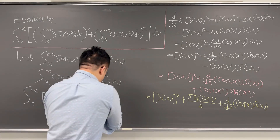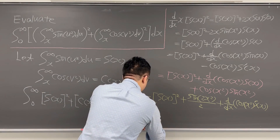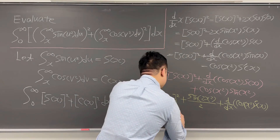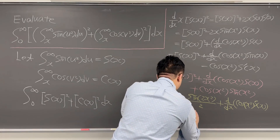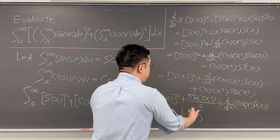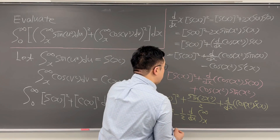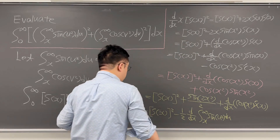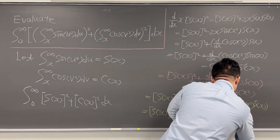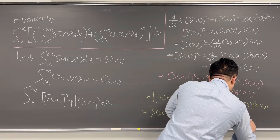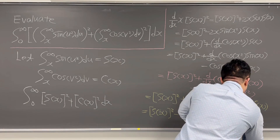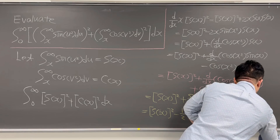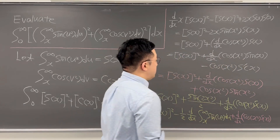So we can rewrite d/dx[x·S(x)²] as S(x)² minus (1/2)·d/dx of the integral from x to infinity of sin(u²) du, plus d/dx[cos(x²)·S(x)]. This is what we have.